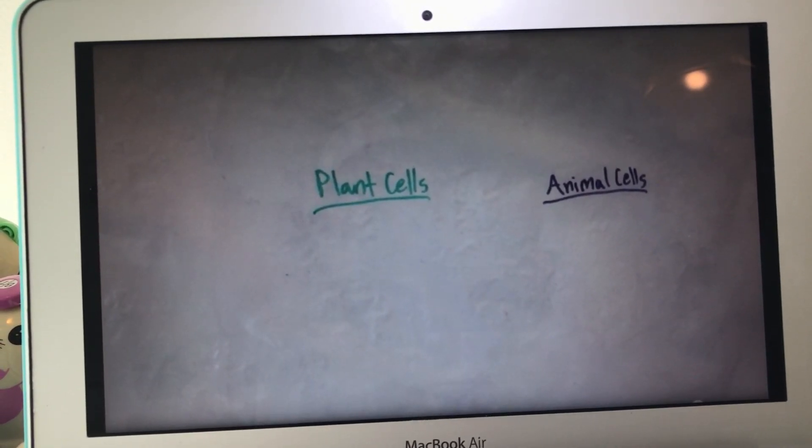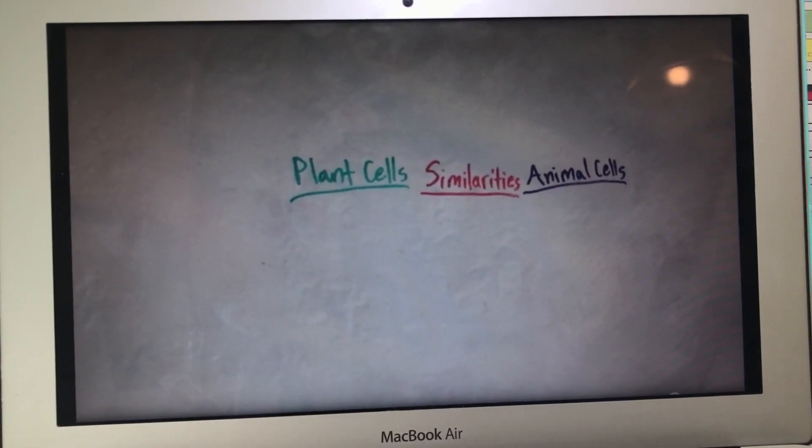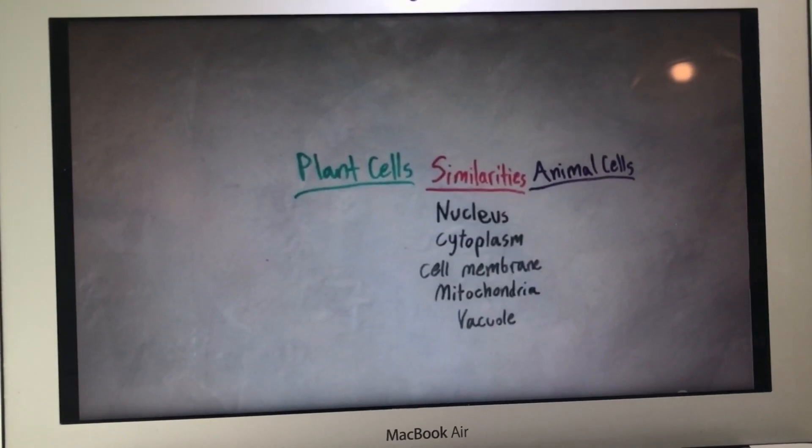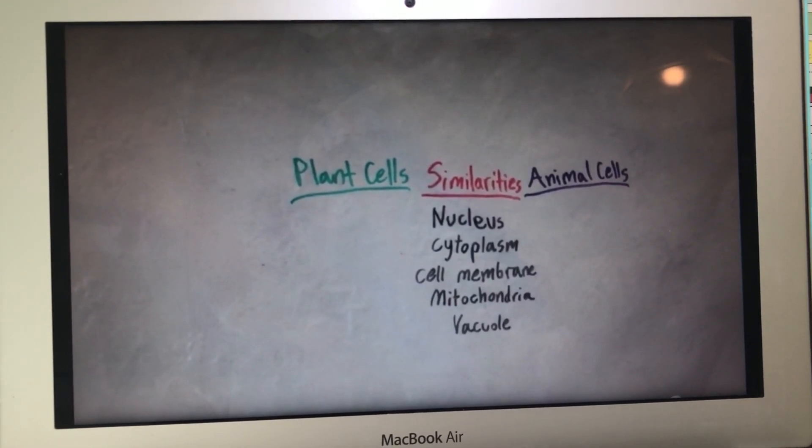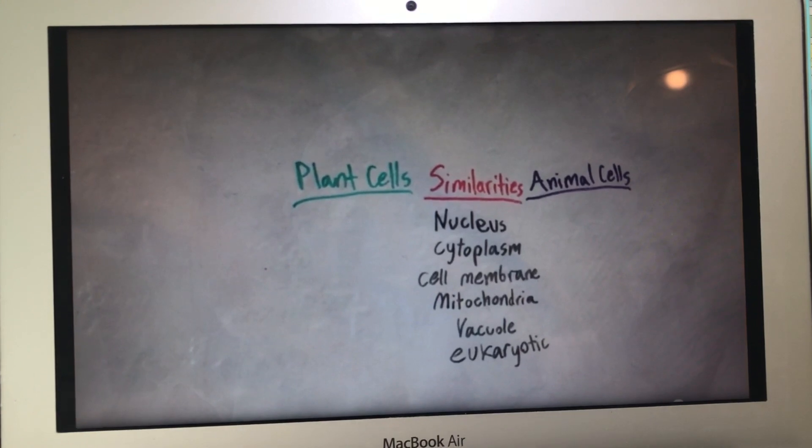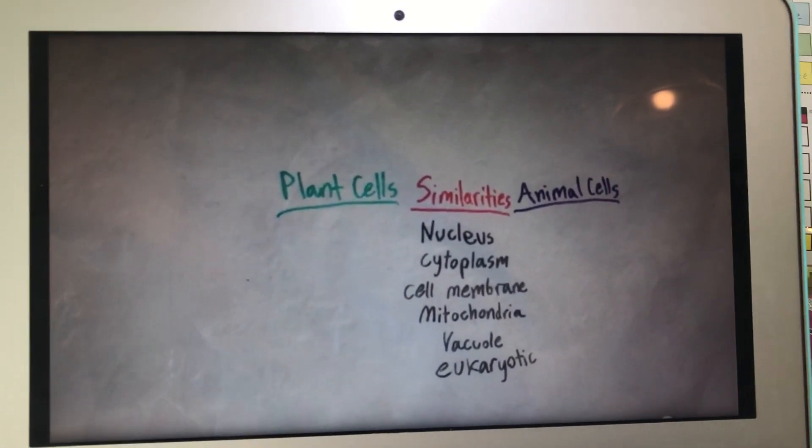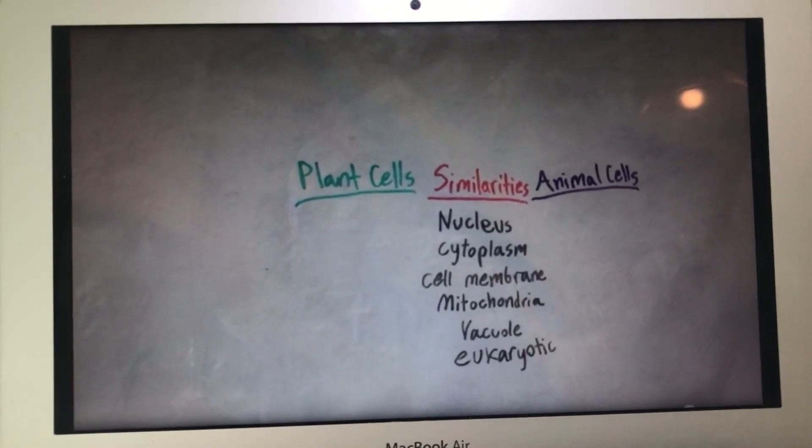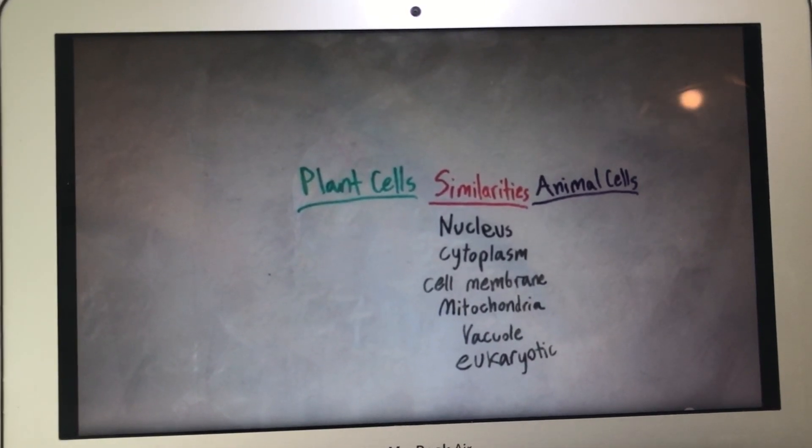In case I went too fast, I'm going to list the similarities and differences of plant and animal cells. The similarities are that they both have nucleus, cytoplasm, cell membrane, mitochondria, and a vacuole. They are both eukaryotic cells. Both plant and animal cells go through respiration all the time. Plants go through photosynthesis when there is light, even artificial light.